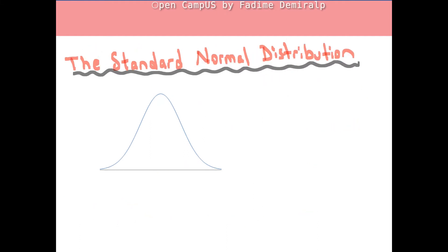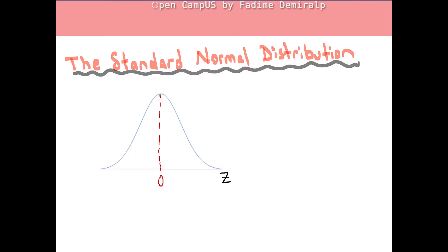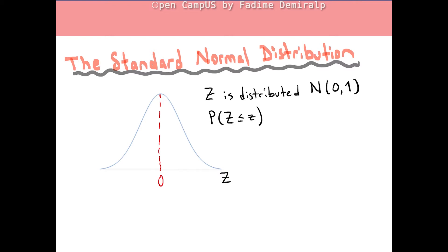The standard normal distribution is a special case of the normal distribution with mean 0 and variance 1. A random variable that has the standard normal distribution is usually denoted by Z. The horizontal axis has the values of the random variable. The probability that capital Z is less than or equal to lowercase z is the area to the left of z on the horizontal line.